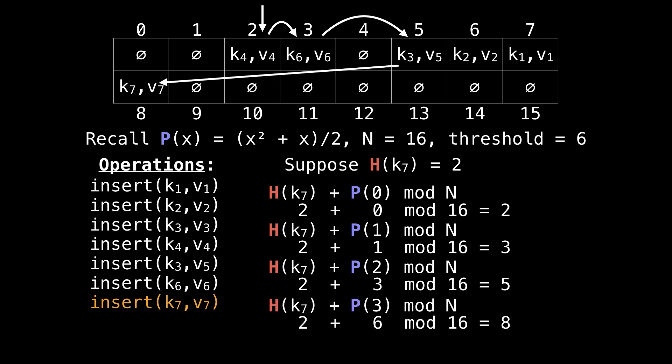So keep probing again. We probe for a fourth time to get an offset of 6. That gives us 8, and that slot is free. So we're going to insert that there.